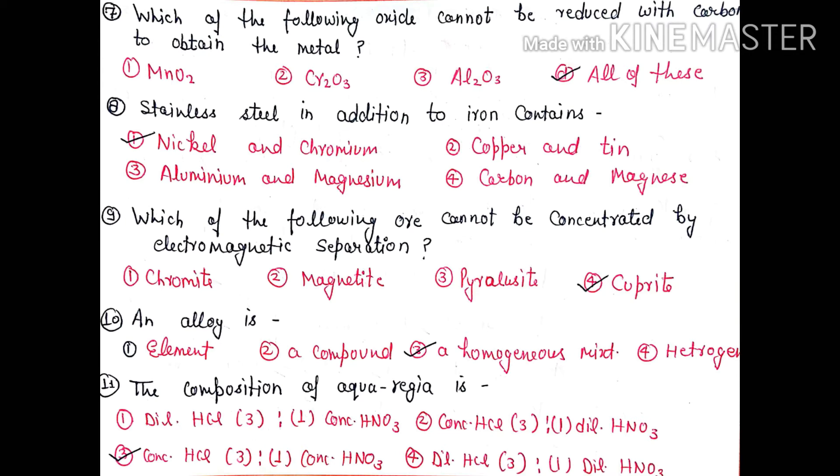Question 11: The composition of aqua regia is - option 3, concentrated HCl and concentrated HNO3 in 3:1 ratio. This mixture is called aqua regia or amla raj.